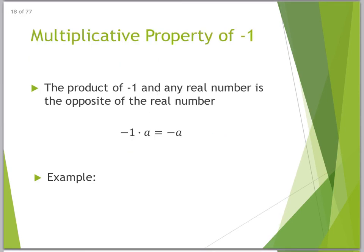Okay, another shocking one. The product of negative 1 and any real number is the opposite of the real number. So, if I say 3, so negative 1 times 3 is negative 3. Likewise, negative 1 times, say, negative 4 is its opposite of positive 4. Multiplicative property of negative 1.